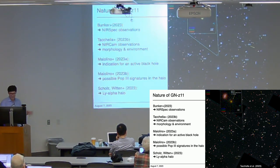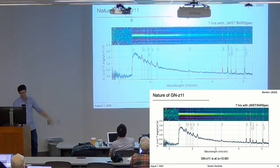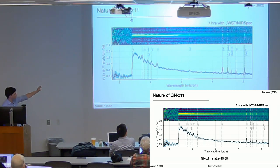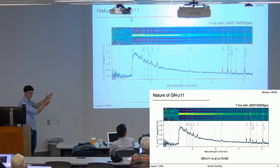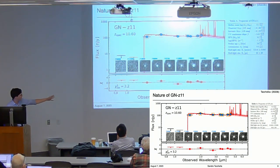The most astonishing data from this galaxy is the spectrum—a seven-hour exposure from the NIRSpec prism. You can see the Lyman-alpha break and a suite of emission lines, allowing us to determine the spectroscopic redshift of 10.6 and learn more about the physical properties of this system. On the photometric side, it is clearly a dropout galaxy detected out to 4 microns, and it is rather compact.